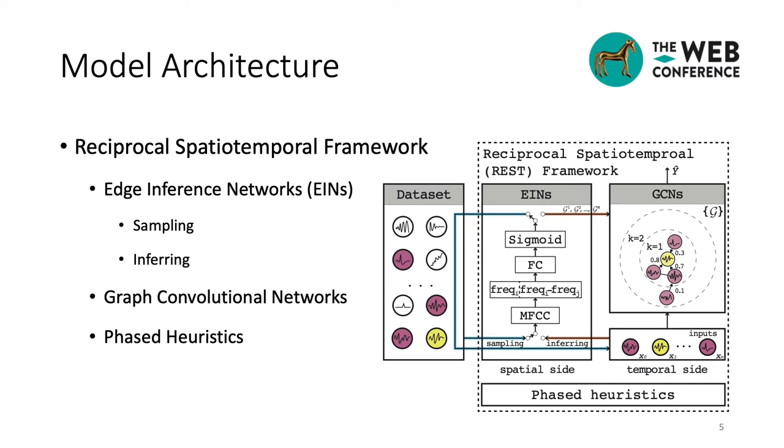Let's see how the REST framework works briefly. To address the first issue and measure the multimodal, isomerous edge features among vertices, we develop the EINs, through the orange line, which transform the time series from the time domain to the frequency domain, and then learn a function to measure the distance among them. To address the second issue, we develop phased heuristics, which drive the training process to converge easily and stably. To address the third issue, we use activated EINs, through the blue line, to sample several potential neighbors of the central vertex before each epoch, rather than calculate all possible linkage each time.